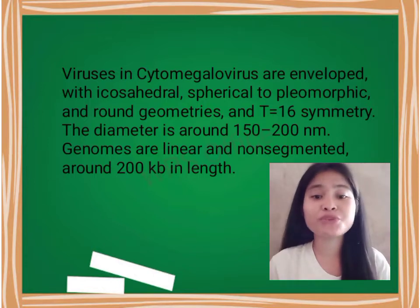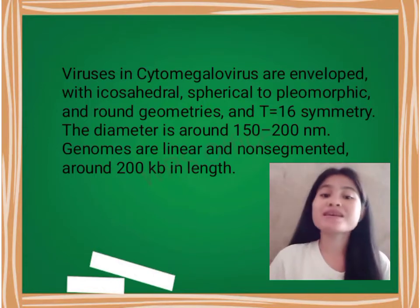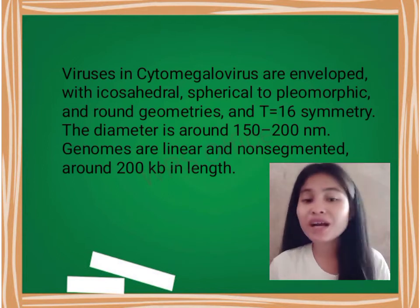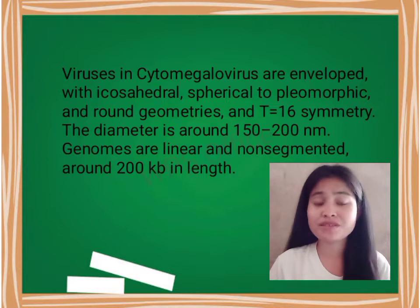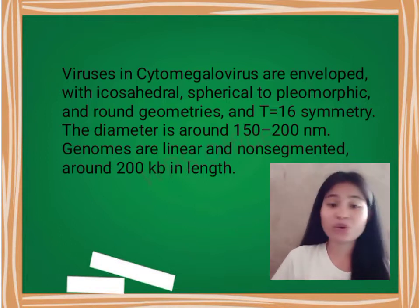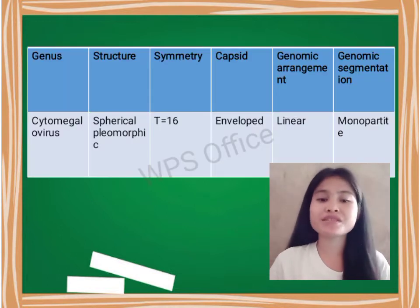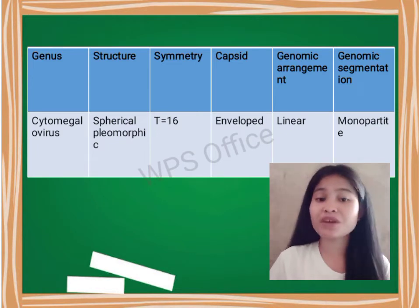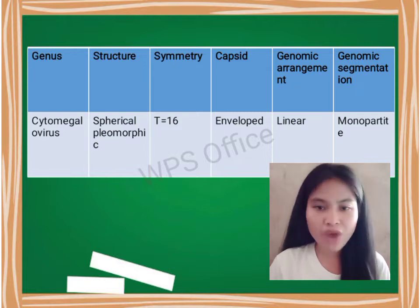Viruses in cytomegalovirus are enveloped with icosahedral, aspherical to pleomorphic geometries and T=16 symmetry. The diameter is around 150 to 200 nm. Genomes are linear and non-segmented, around 200 kb in length.